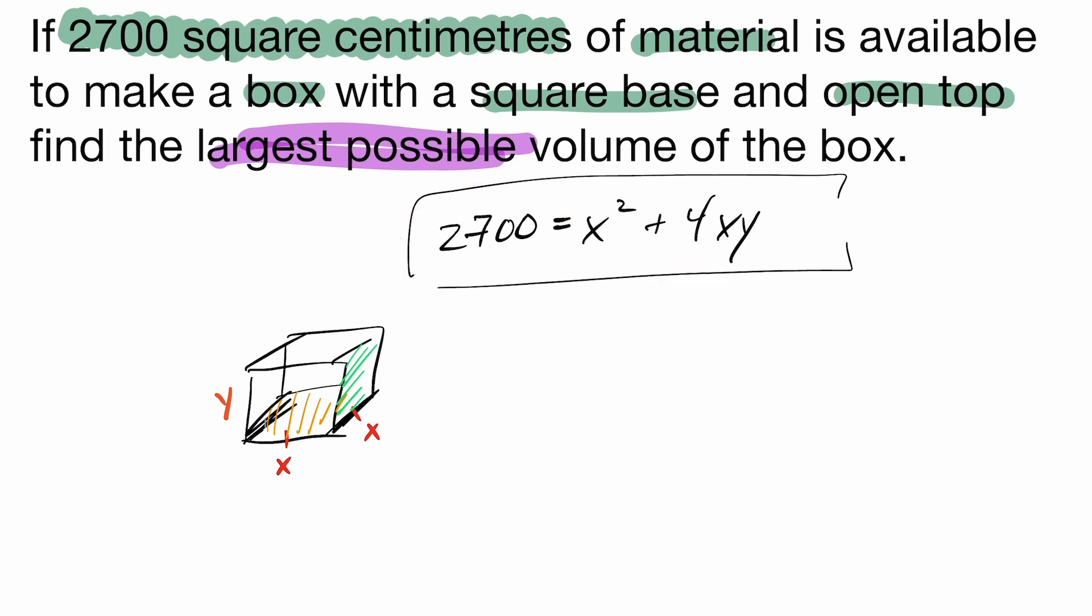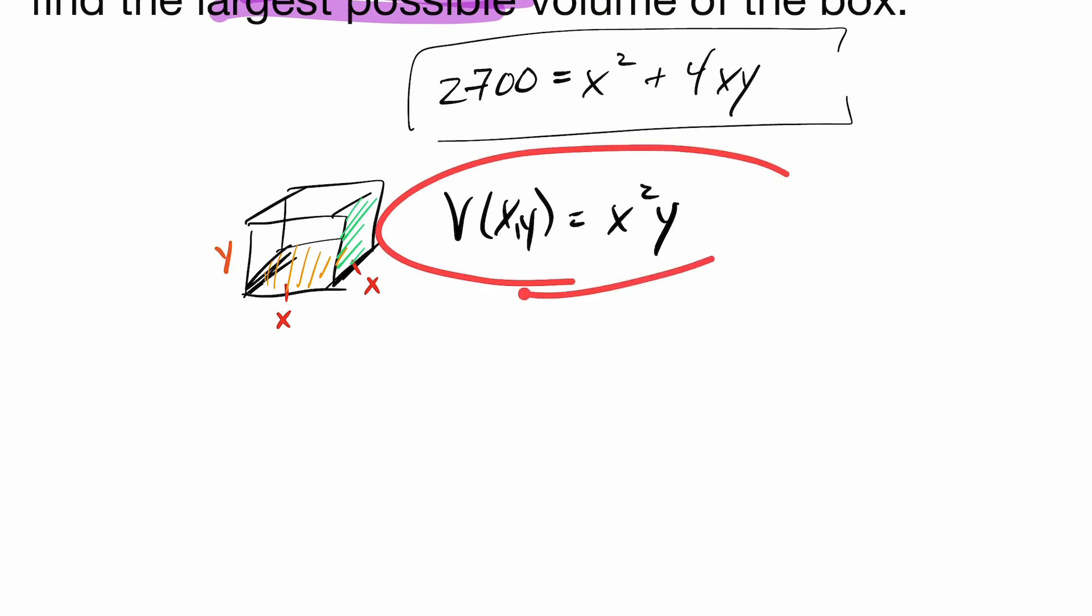Now what I want to do is calculate the largest possible volume. So what dimensions are going to yield largest possible volume? So an expression for the volume of this shape would be X squared times Y. So now we're in a situation where I want to maximize this expression here, but I have two variables. So we want to get this down to one variable to maximize this, but I do have my constraint.